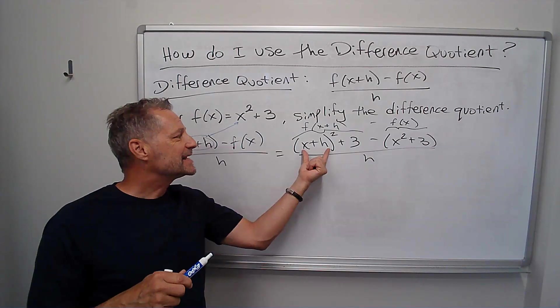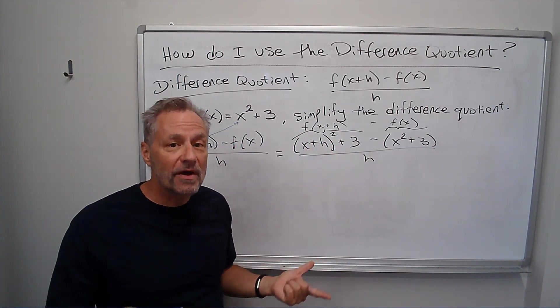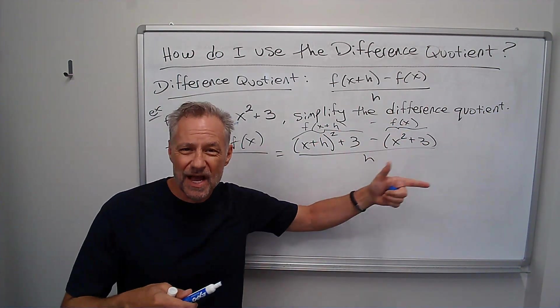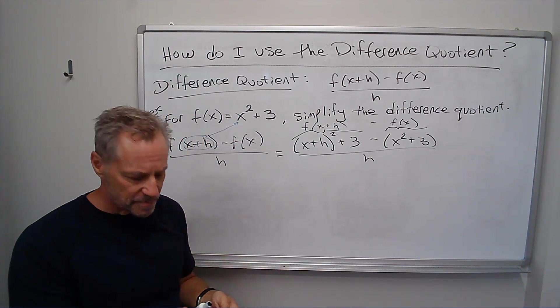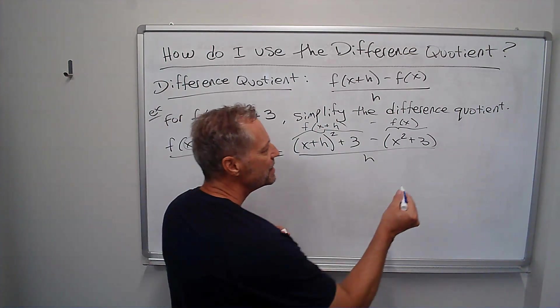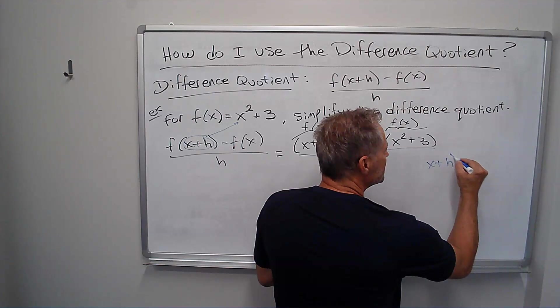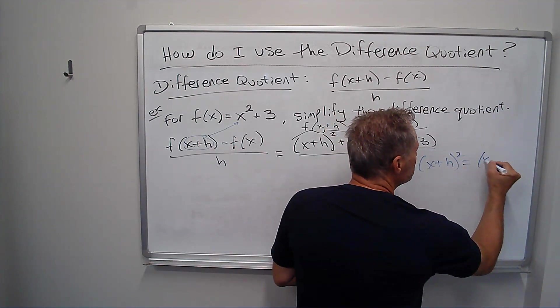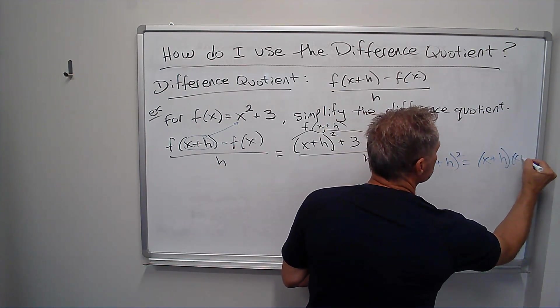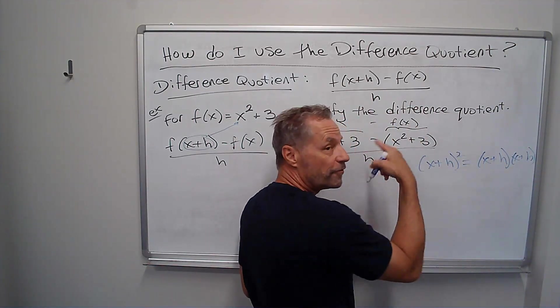And then lastly, this x plus h squared, you have to FOIL that out. I'm going to do that off to the side, just so we remember how to do it. I'll use my blue pen to do that. But remember, x plus h squared means x plus h times x plus h. I have to FOIL that out.